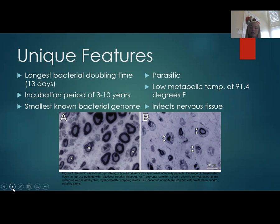Another unique feature of M. leprae is that it's the only mycobacterium that we know of that infects nervous tissue. M. leprae attacks the Schwann cells surrounding the axons of peripheral nerves. This results in demyelination, nerve injury, and eventually disability because of the loss of sensation and communication in affected areas of the body. It has been suggested that M. leprae also changes the Schwann cells into a different kind of cell that can migrate throughout the body spreading the disease. This migration would explain the lesions on the epidermis and degradation of extremities such as fingers, toes, nose, and ears.